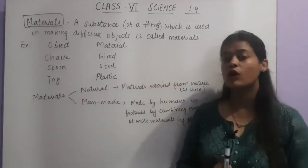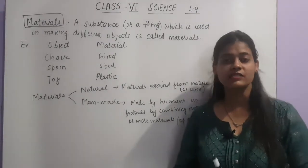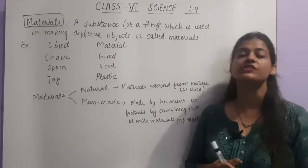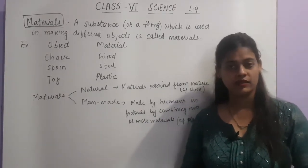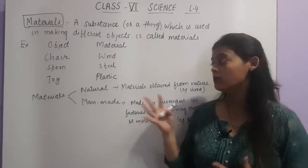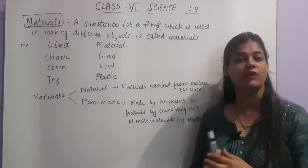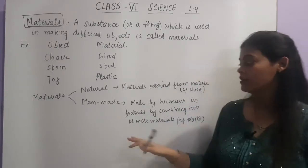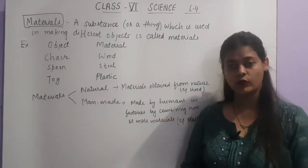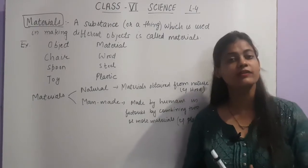So these are the objects and the materials are the things by which an object is made up of. There are many things around you which are made up of different things, and on the basis of their use, objects are made up of a specific material. Like this marker I am holding is made up of plastic, and this board is made up of wood. So different objects around you are made up of different materials.